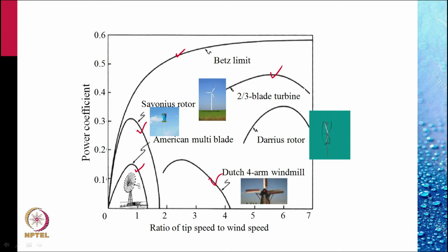And this is the Darrius rotor in which again no pointing mechanism is required. These are a number of aerofoils which are arranged to rotate about a vertical axis.